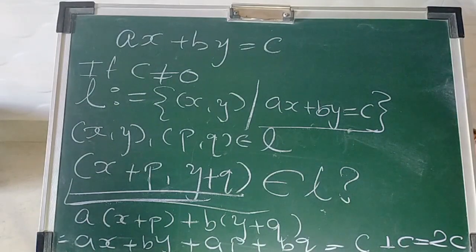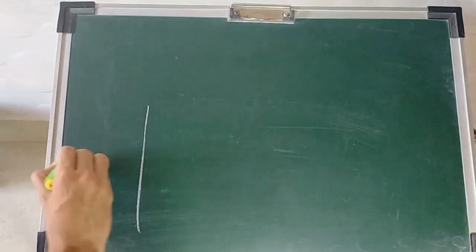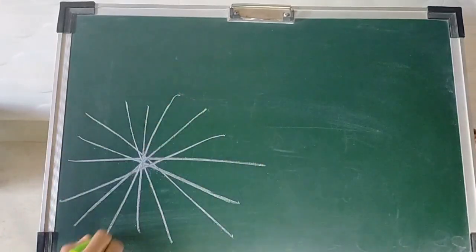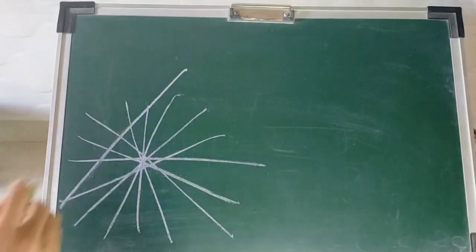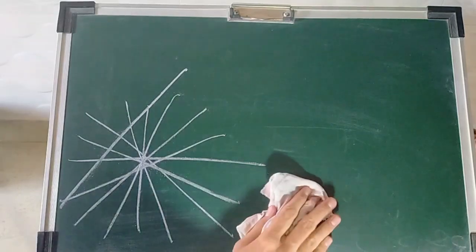We observe that in R² the only possibilities for a subspace are lines passing through the origin. Lines not passing through the origin cannot be a subspace — the simple reason is (0, 0) is not an element of them, or more precisely, addition is not closed. But now we need to prove that lines passing through the origin actually are subspaces of R².